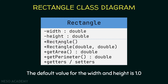There are two public constructors: the first takes no parameters and the default value for width and height is 1.0; the second takes two double parameters for width and height. We also have a public method getArea() which returns a double, and getPerimeter() which also returns a double, plus getters and setters for both attributes.